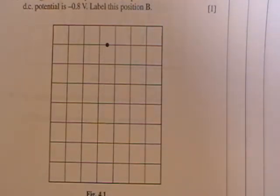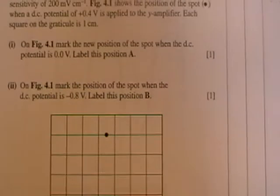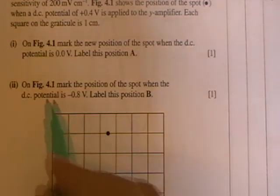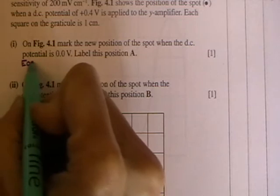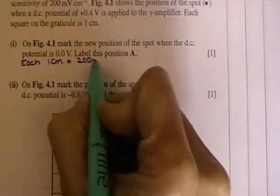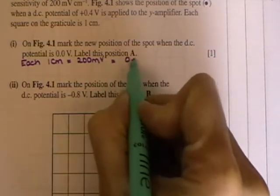On figure 4.1 mark the new position of the spot when the DC potential is 0 volts. Label this position A. So the position you can see at the minute is a position of 0.4 volts and we know each square or each one centimeter is 200 millivolts which is the same as 0.2 volts.